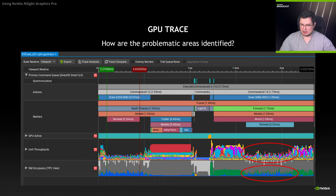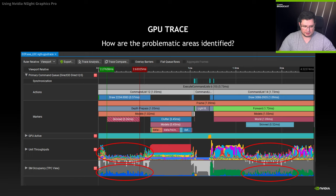Given that this happens in a forward pass, it is also reasonable to assume that the same happens in a depth prepass: first high unit throughput, then low unit throughput, then up again. The same pattern is also visible for SM occupancy.